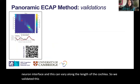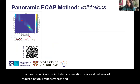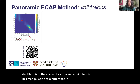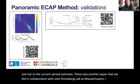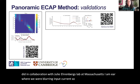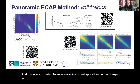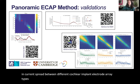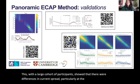We validated this method in a number of different ways. One of our early publications included a simulation of a localized area of reduced neural responsiveness, and the PCAP algorithm was able to identify this in the correct location and attribute the manipulation to a difference in the neural responsiveness estimate and not to the current spread estimate. There was another paper in collaboration with Julie Ehrenberg's lab at Massachusetts Eye and Ear, where we were blurring input current by stimulating multiple electrodes at once, and this was attributed to an increase in current spread and not a change to neural responsiveness. We were also able to assess differences in current spread between different cochlear implant electrode array types, showing with a large cohort of participants that there were differences in current spread, particularly at the apex, for straight electrode arrays compared to pre-curved ones.